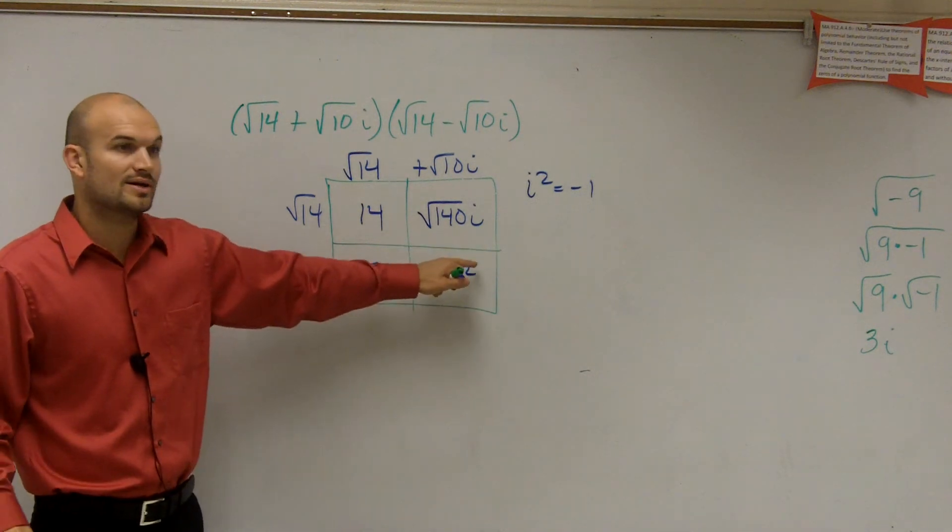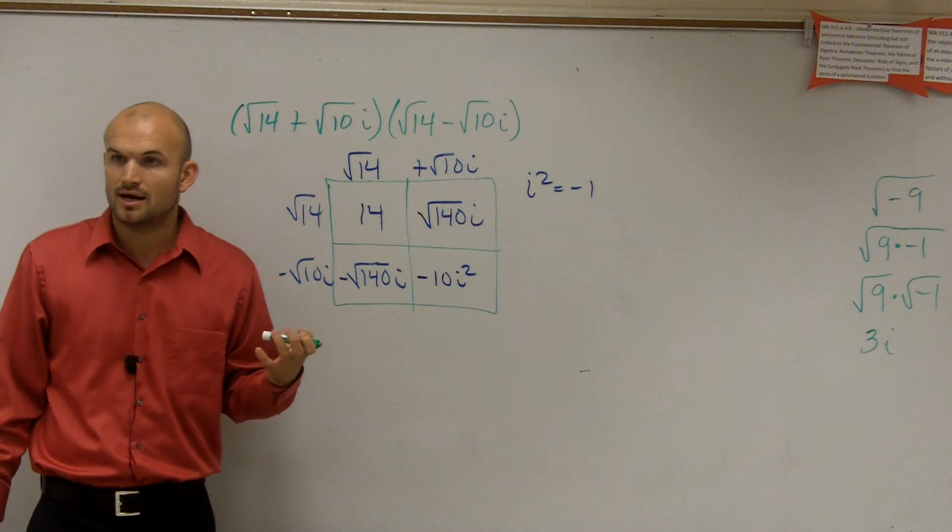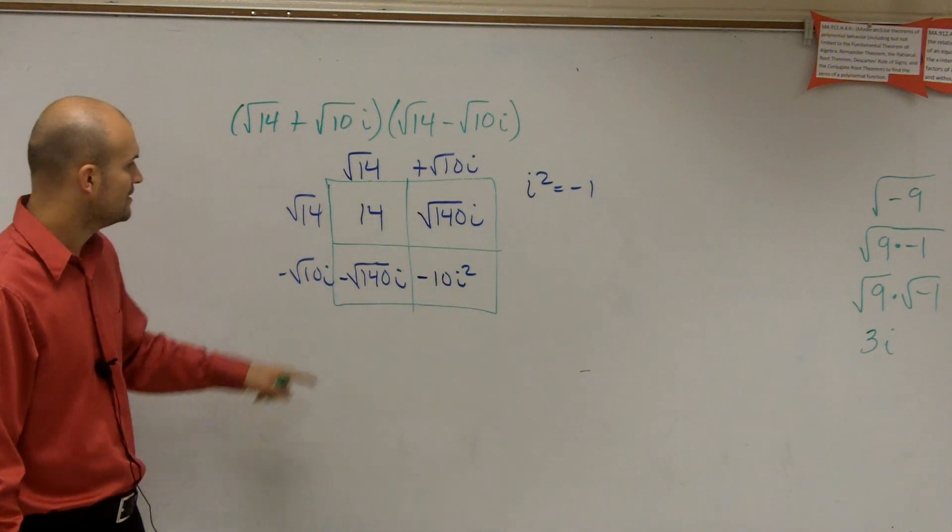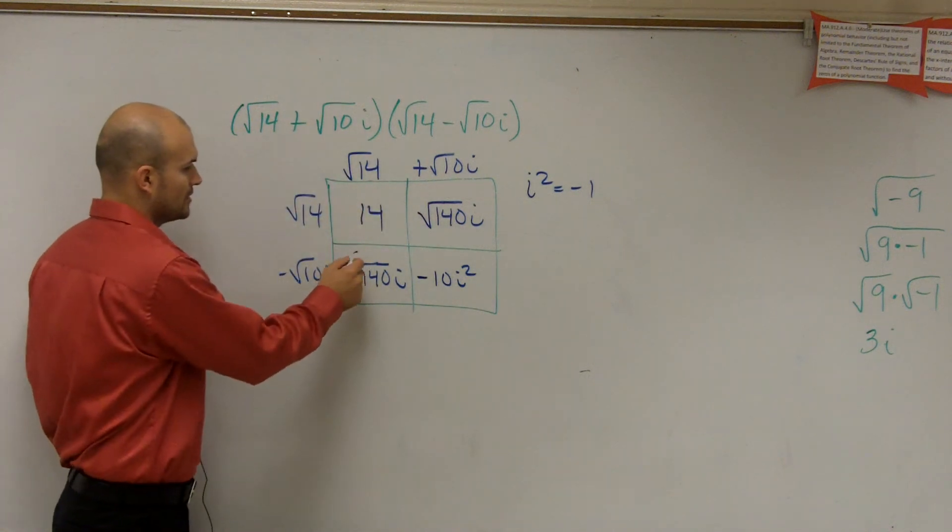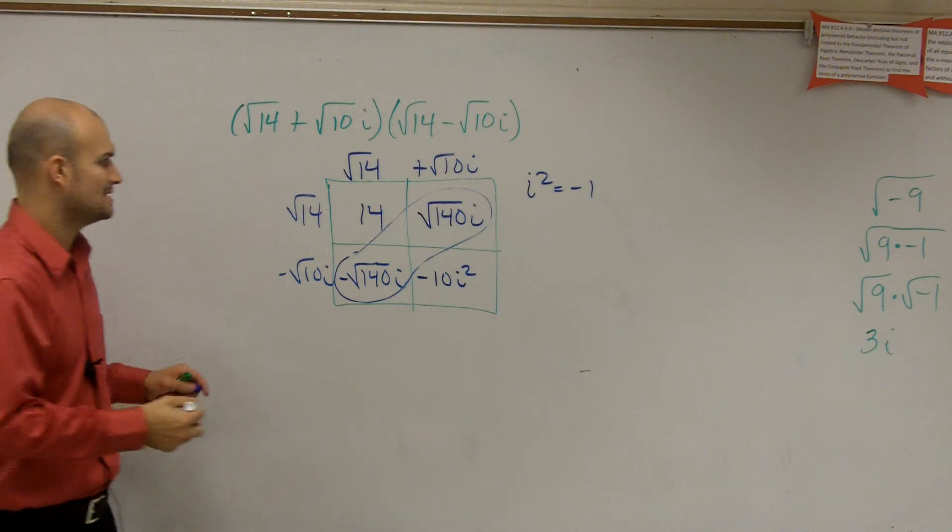So therefore, I can rewrite i squared as negative 1. So when I rewrite this problem out, this is going to be a positive 10. So what we notice is these are the like terms, right? These are the same. So guess what? Cancel out.